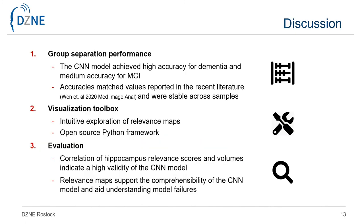To summarize, we were able to train an accurate CNN model achieving high accuracy for dementia and medium accuracy for MCI. We developed a visualization toolbox for intuitive exploration of relevance maps using an open-source framework, provided as a web service for everyone to test. Correlation of hippocampus relevance scores and volumes indicates high validity of the CNN model. Relevance maps support the comprehensibility of the CNN model and aid understanding of model failures.